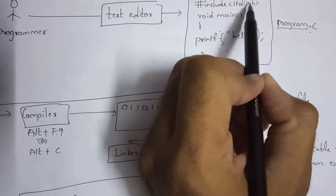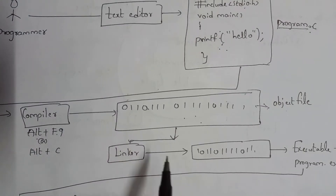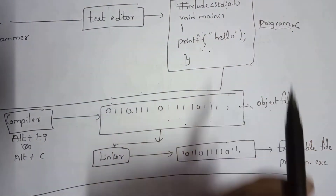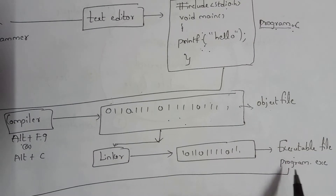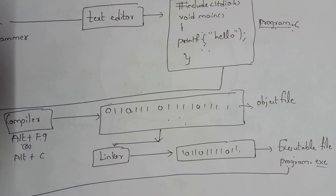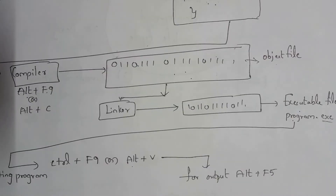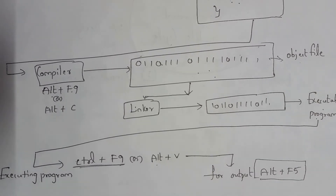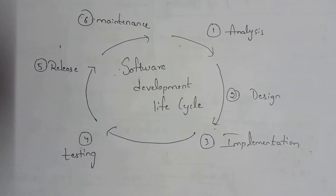After compiling, the next step is linking. Your program is linked to the header file stdio.h — this process is known as linking. After linking with header files, an executable file is created. Your program.c file is converted into an executable file, that is program.exe, where exe stands for executable. When you click Alt+F9, both compiling and linking are done. Once the executable file is created, click Ctrl+F9 to execute the program, and click Alt+F5 to display the output.